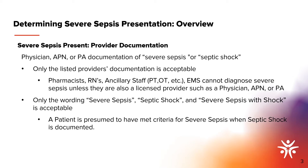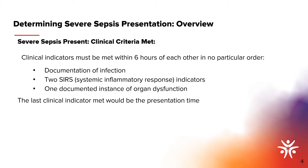Documented septic shock would imply that the patient met severe sepsis criteria also. Clinical criteria met is the second way to determine the presence of severe sepsis. All required clinical indicators must be met within six hours of each other in no particular order: the documented infection, two SIRS indicators, and documented organ dysfunction. Whichever clinical indicator is met last determines the onset timing. For this presentation, we will assume that the documentation of infection in the provider note is the last clinical indicator determining the onset of severe sepsis or septic shock.